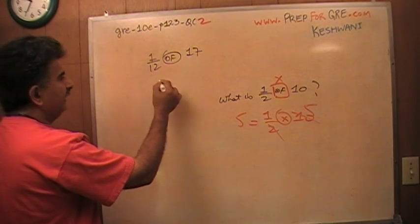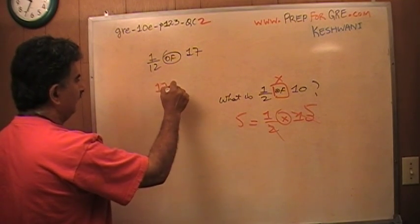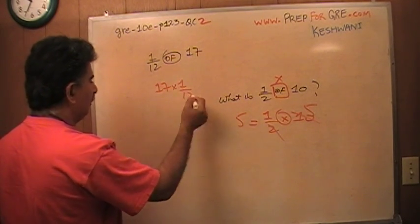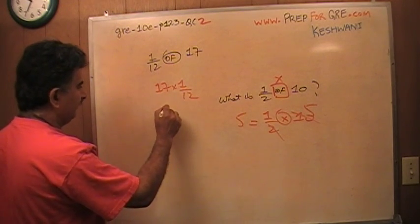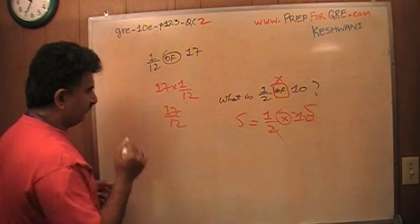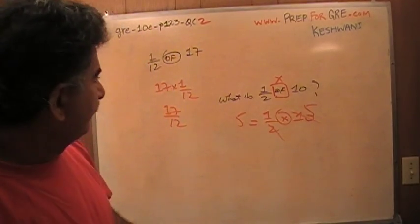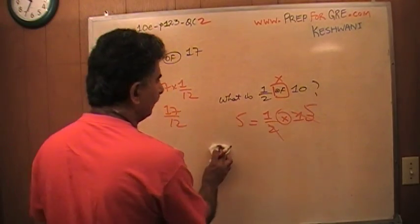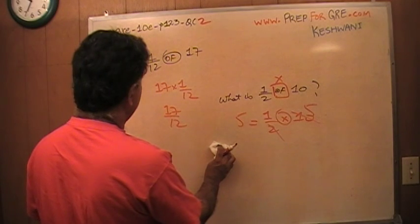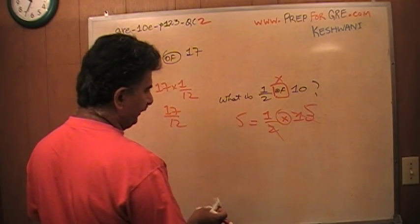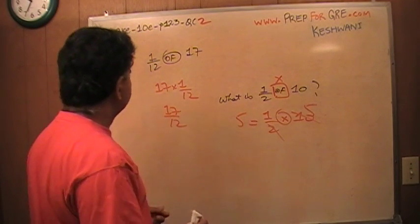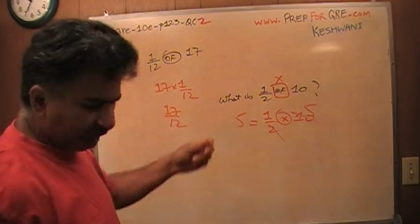So one 12th of 17 is same as 17 times one 12th, or one 12th times 17, same thing, which is 17 over 12. That's what this quantity is. Let's look at the quantity in the second column. I need to erase this again. I shouldn't have put it way up high here. Let's look at the quantity in the second column. I'm going to try to squeeze it over there.